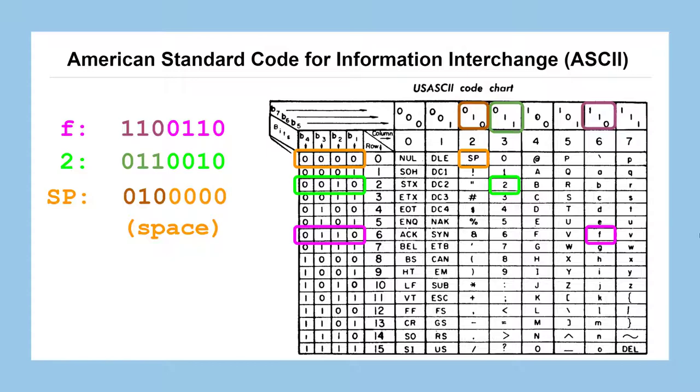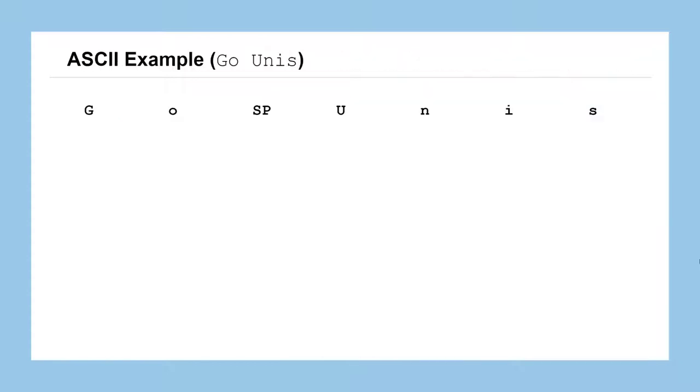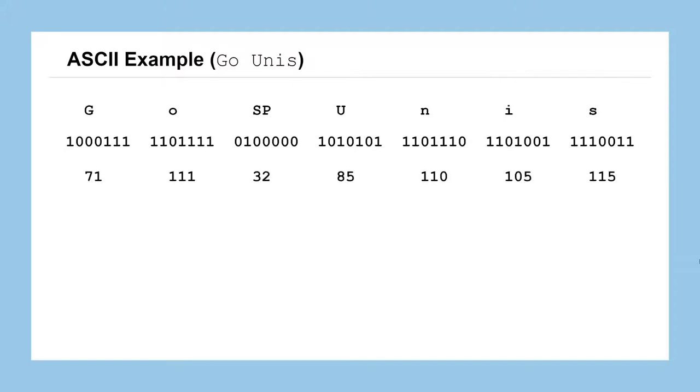So we'll look at an example here of this 7-bit system to encode the message GO UNIS. So here we have our letters all spaced out. We'll use a capital SP to represent the space between the two words. And then we could use that ASCII table to convert each of these characters into the corresponding 7-digit binary number. And if you wanted, we could convert those back to their decimal representations. It just depends on how you intend to use it, whether it be on the computer or by hand, but we'll have both representations here available to us.